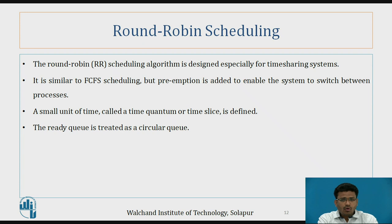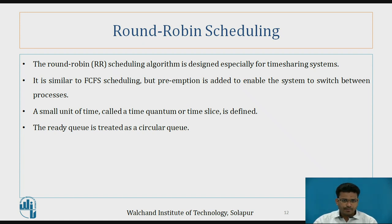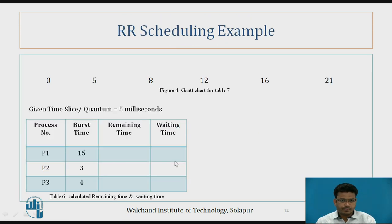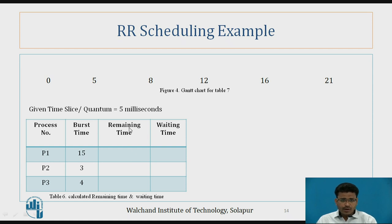Now let's see the Round Robin scheduling algorithm. In this algorithm the system gives a time quantum, also called a time slice, meaning each process executes for a specific period of time. Here we have different processes with their burst times, and the given time quantum is 5 milliseconds.